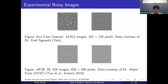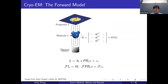Here we have some experimental noisy images, and it's pretty much impossible for the naked eye to tell where these proteins are. Mathematically, we have a molecule phi encoding the electrostatic potential. To form each image I_i, we have a point spread function h_i convolved with a projection taken at an unknown rotation of the electrostatic potential of our molecule, plus epsilon_i, which we call white Gaussian noise.